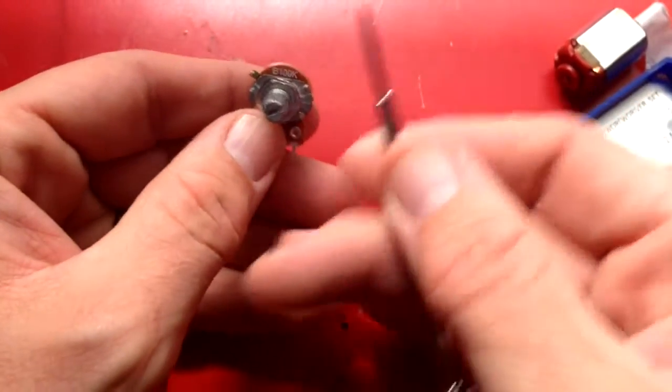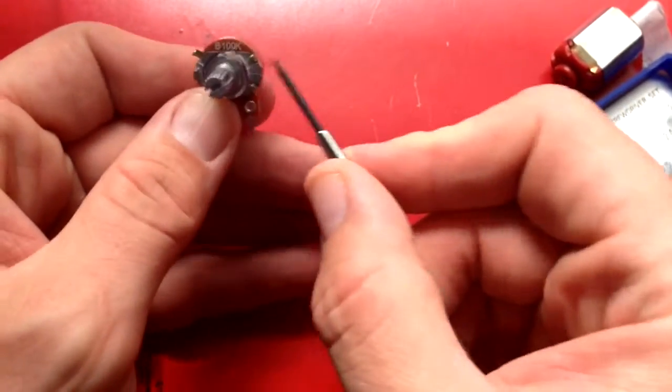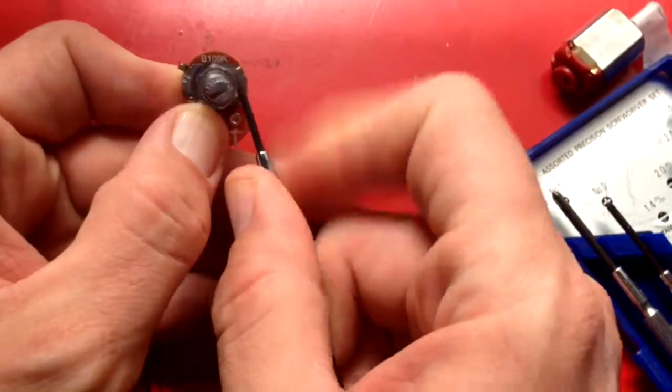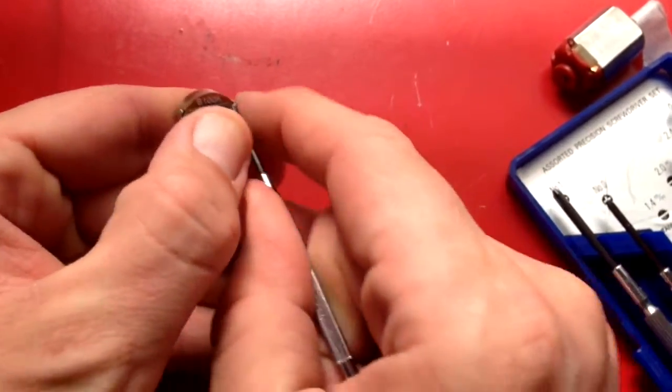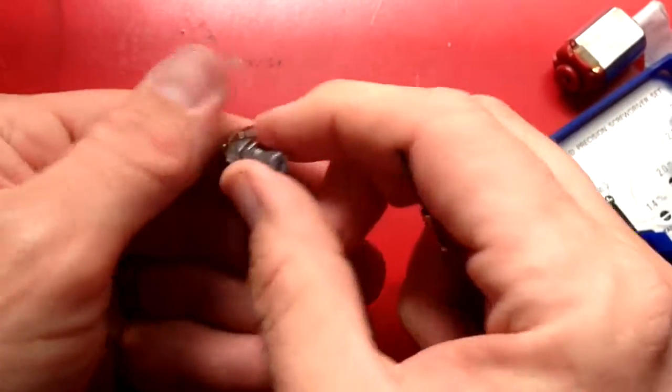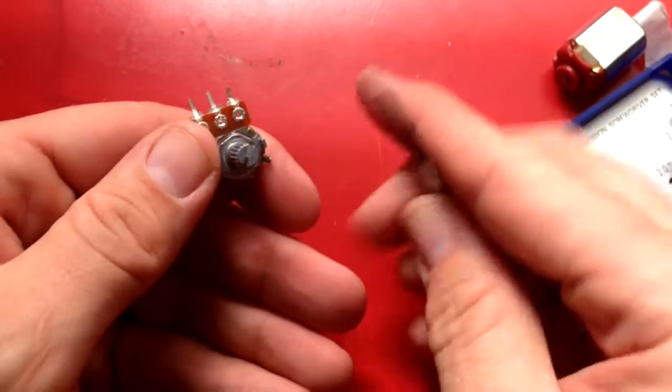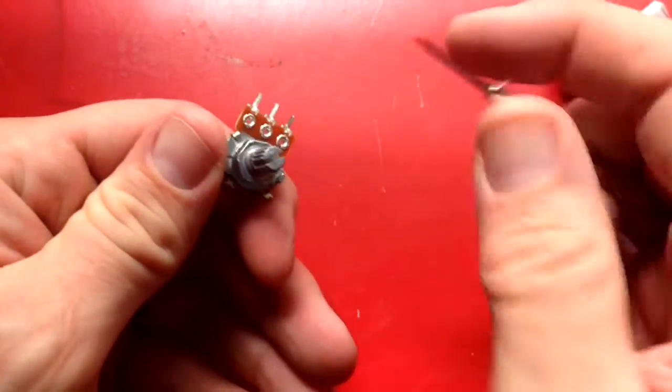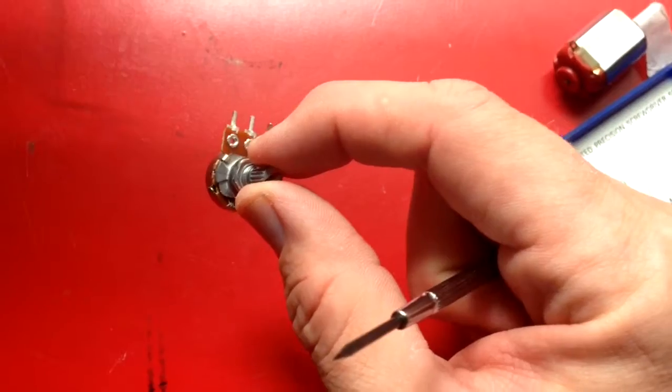So what I realized is I can get a flathead screwdriver, and if I just push on the lip right here outwards, I can move it. There's four of those tabs, one on each side, so I'm going to push those the rest of the way out and take it apart.